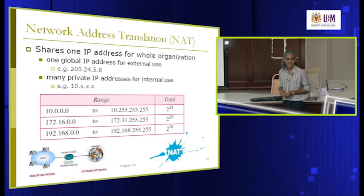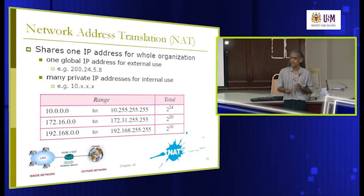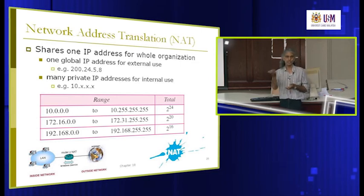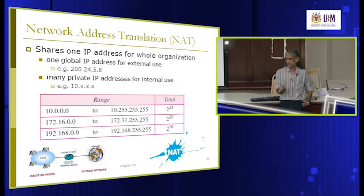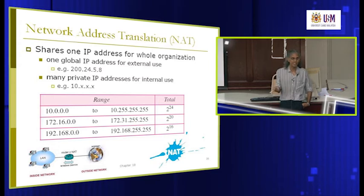What if you only have one IP address given to you? There is a way to use one global IP address for the whole organization — this is where NAT (Network Address Translation) comes in. If you buy one IP address and set up a LAN at home with 20-30 machines all wanting internet access, you can either request more IP addresses from your ISP or use NAT to share one.